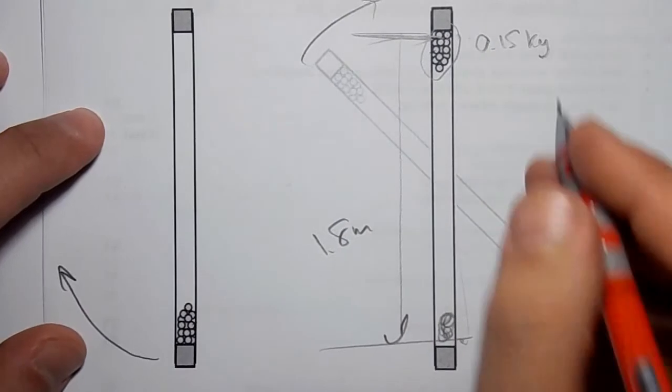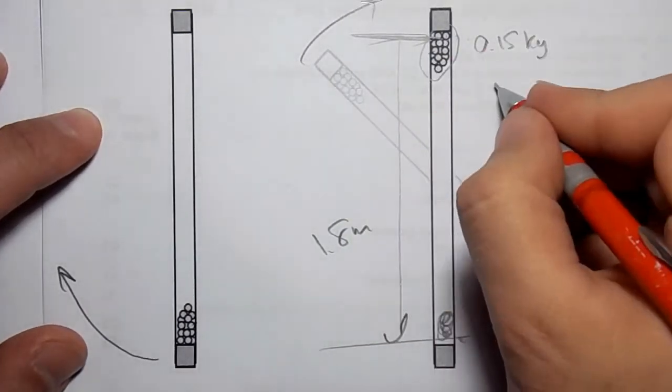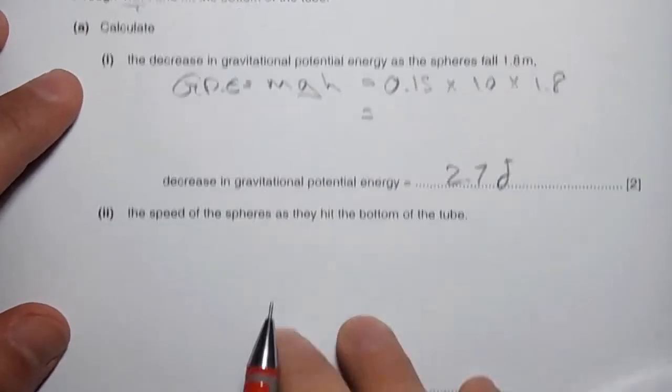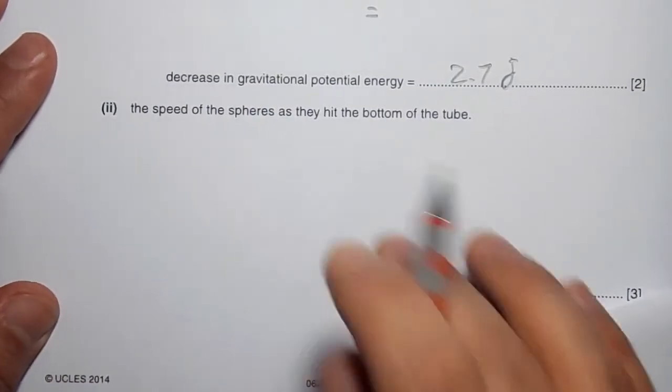So this sphere when it was here had 2.7 joules which it lost when it descended. Now the question asks: what is the speed of the spheres as they hit the bottom?